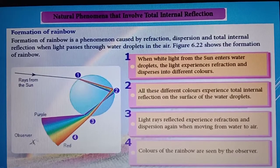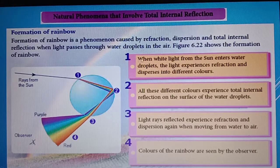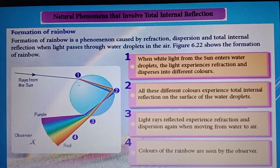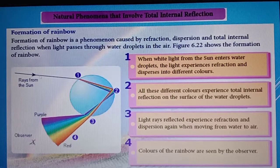You can see how the light ray from the sun, which is white light, reaches the water droplet. When it reaches there, the light experiences refraction and dispersion. It will be refracted to a different angle because different colors of light refract to different angles. White light consists of 7 colors.